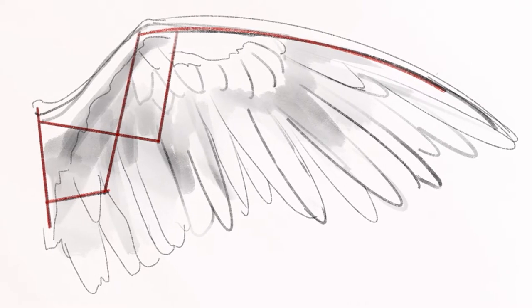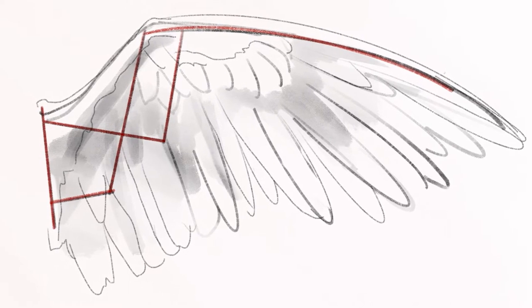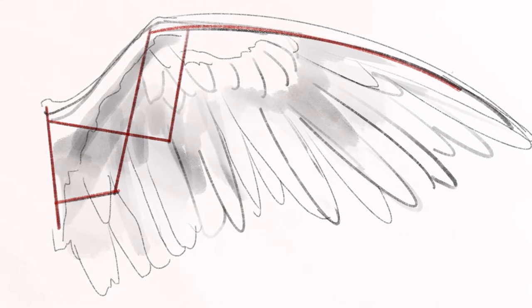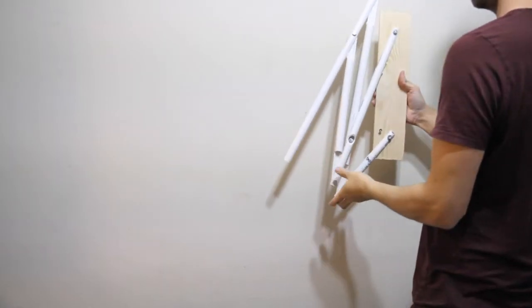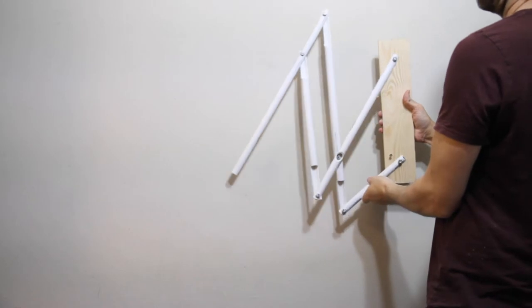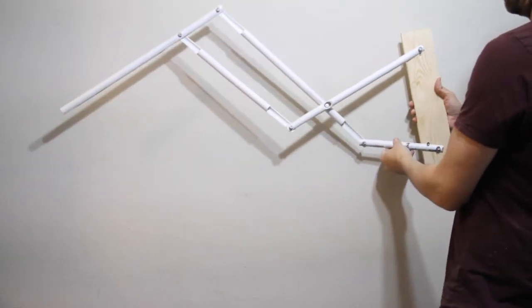I was exploring a few different ways to do the wings, but this is roughly what I came up with. I'm using PVC and the same joints that I was mentioning earlier.